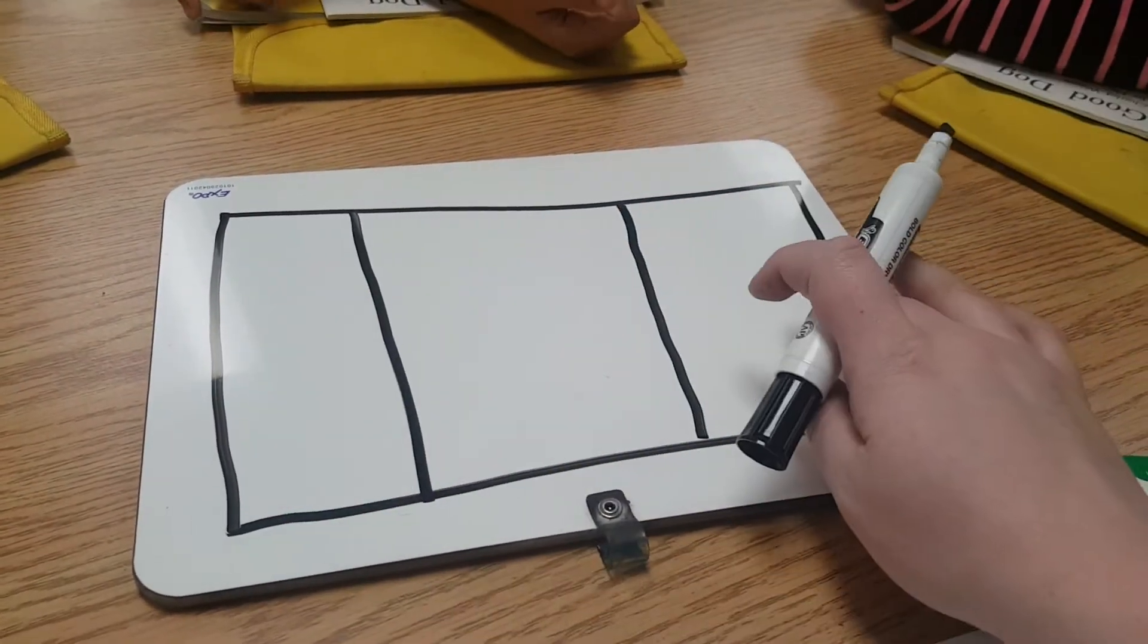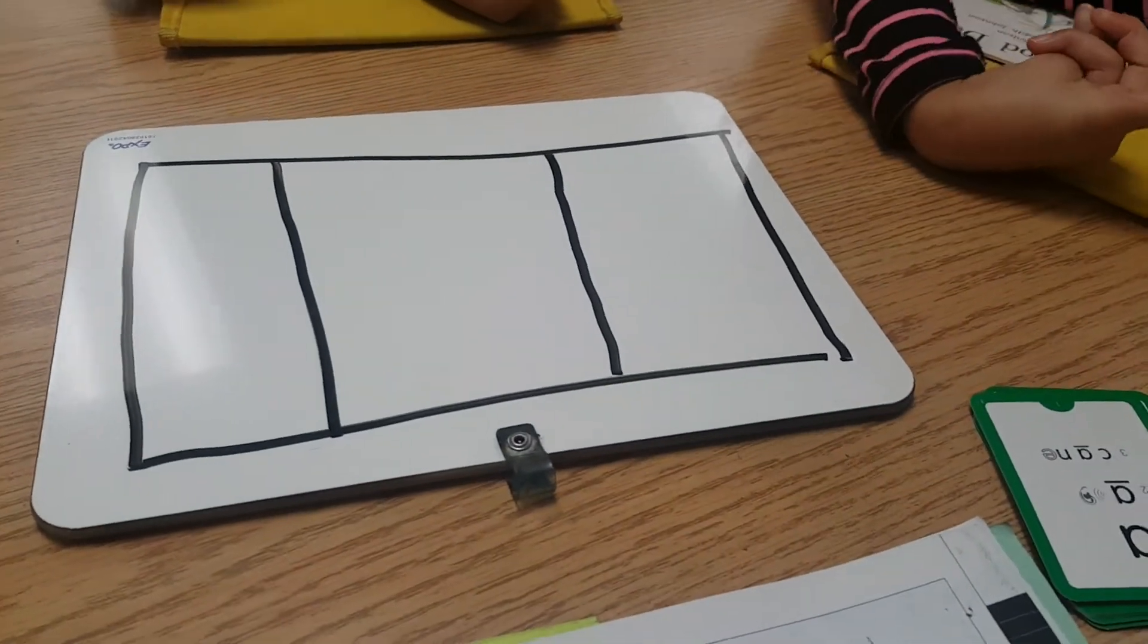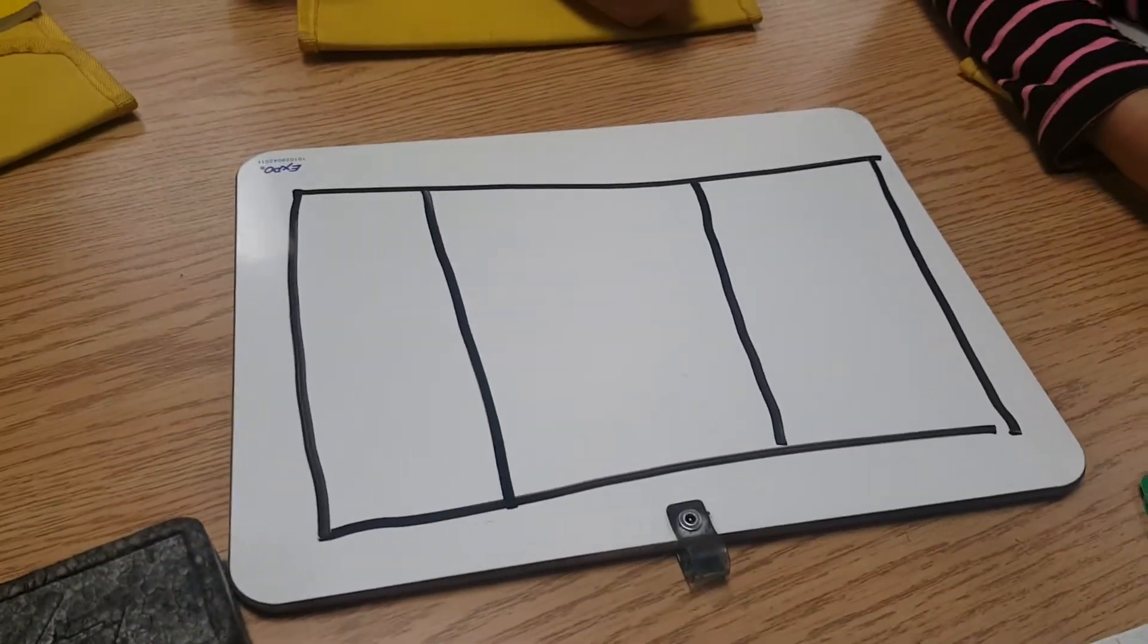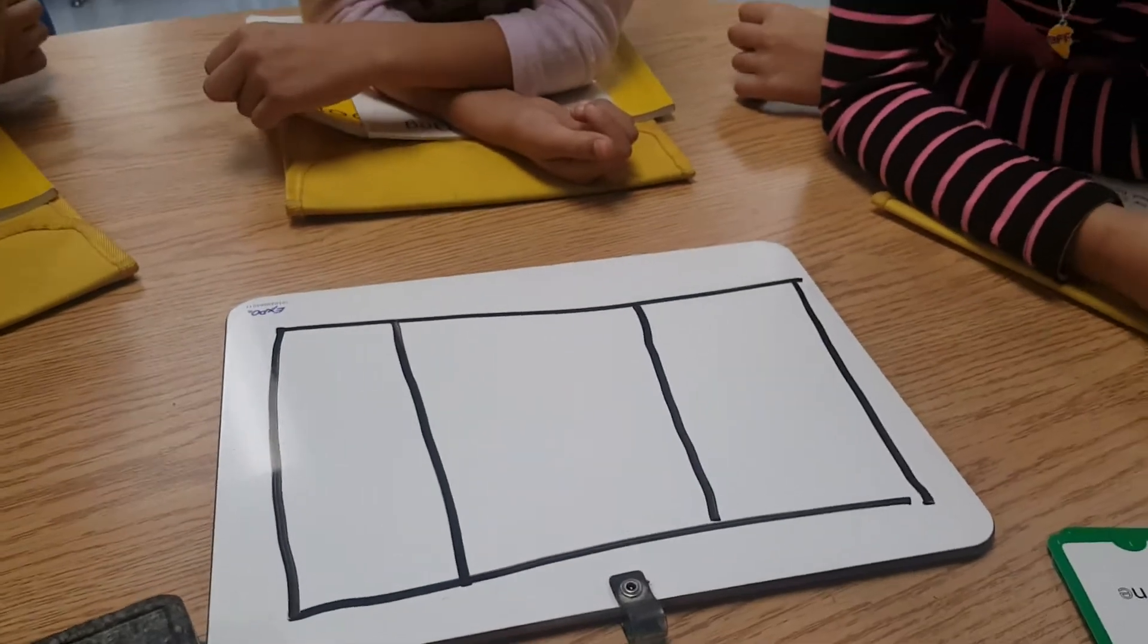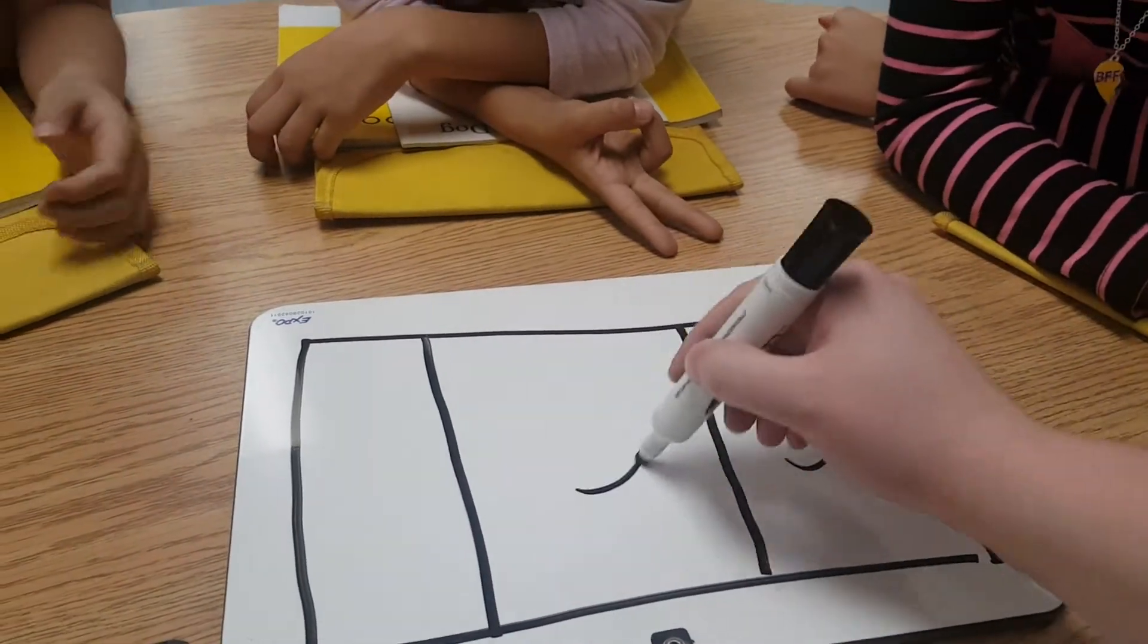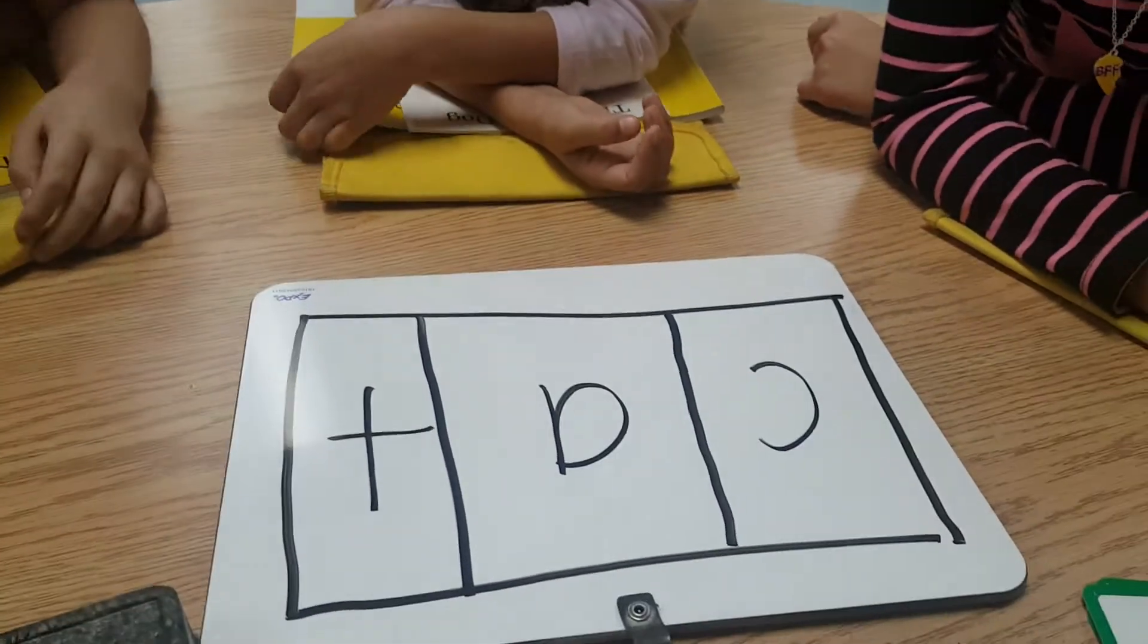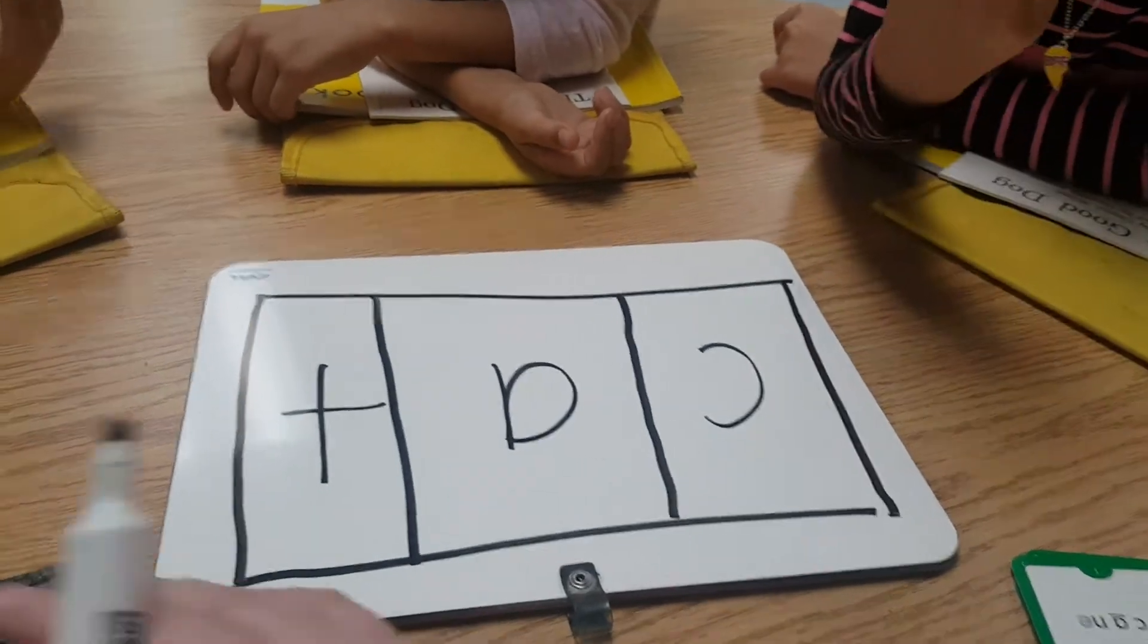So if I have three boxes, I'm going to put three sounds in the boxes. So let's try the word cat. Say the sounds with me as I put them in the boxes. C-A-T. How many sounds are there? And how many letters do I write? Very good.